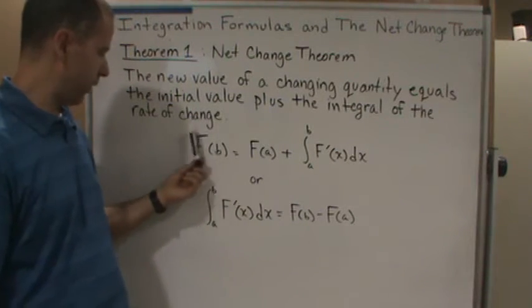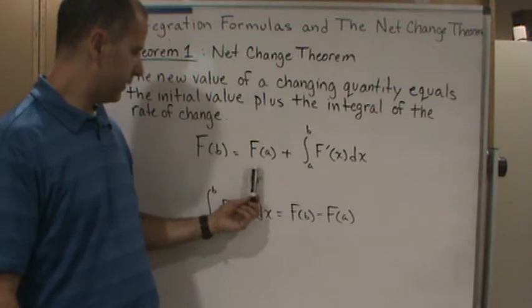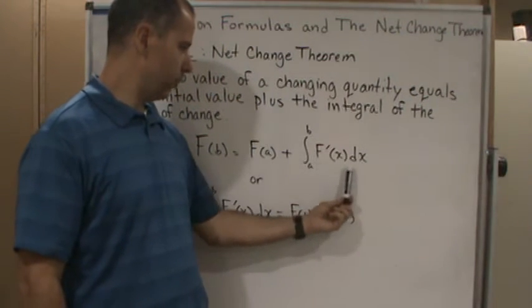So here's the formula: the final value F(b) equals the initial value F(a) plus the integral of the rate of change.